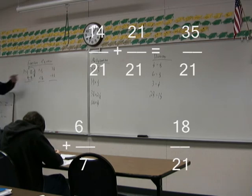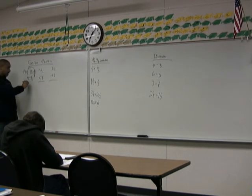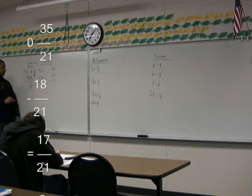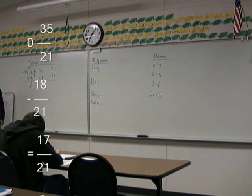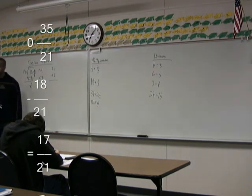Thirty-five minus eighteen is seventeen, all over twenty-one. Zero minus zero is obviously zero. So the answer is seventeen twenty-ones. Can we reduce it? No. Moving right along.